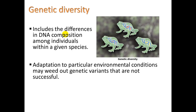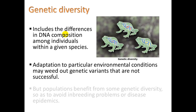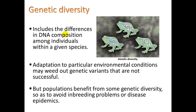Adaptation to particular environmental conditions may weed out genetic variants that are not successful. We don't want all species to have exactly the same genes, because if one is not successful — meaning unable to survive and reproduce — they're all not successful and the species goes extinct. Populations benefit from genetic diversity to avoid inbreeding problems or disease epidemics. With inbreeding, recessive genes that don't normally manifest can appear in offspring if both parents share that same recessive trait, and some of those traits can be very serious.